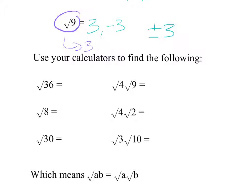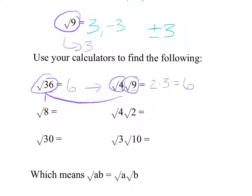Get out your calculators and find the square root of 36—that's just 6. But look at the square root of 4 and the square root of 9 separately: the square root of 4 is 2, the square root of 9 is 3, and 2 times 3 is 6. Notice that 4 times 9 is 36. So splitting a square root into two smaller factors gives the same answer.